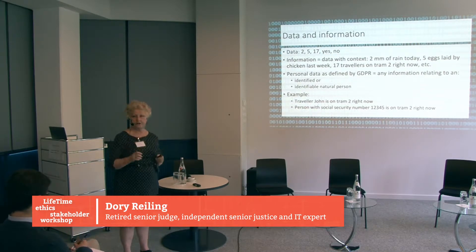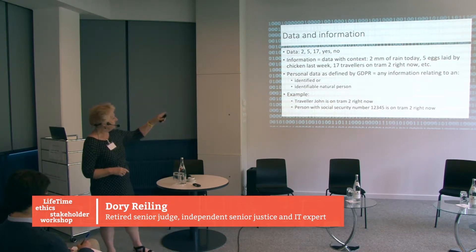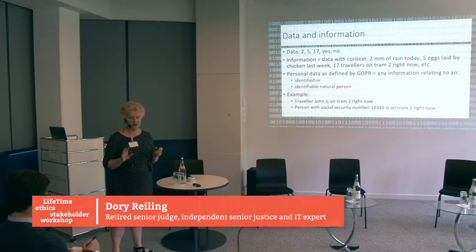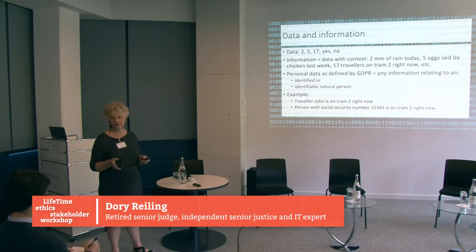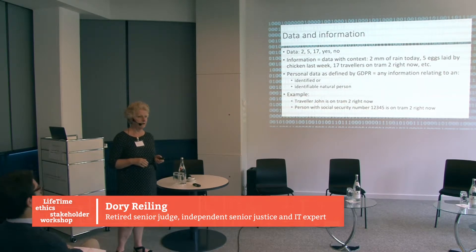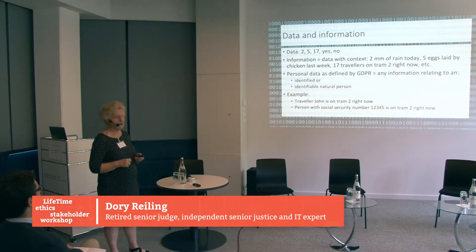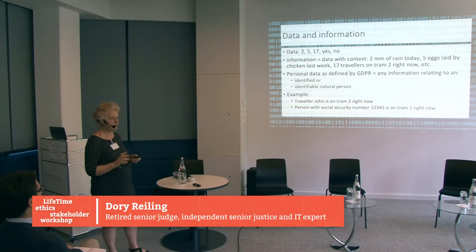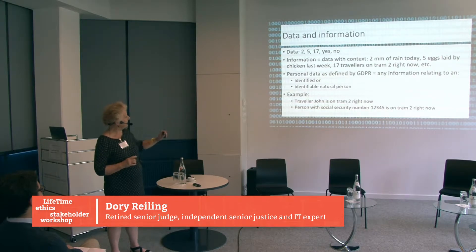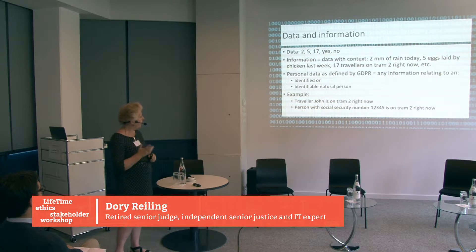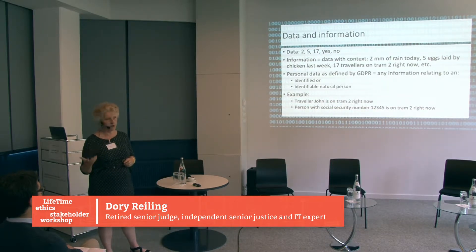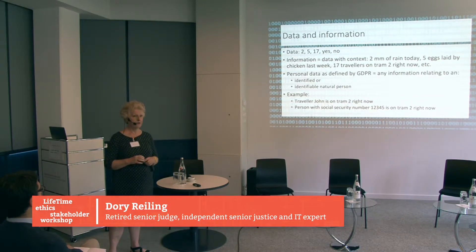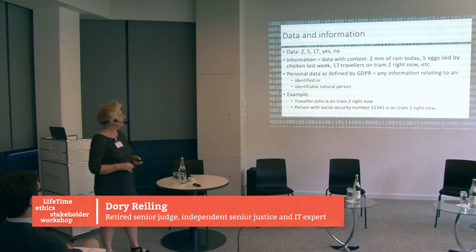I thought I'd give you the definition from the GDPR, and I was really surprised when I looked it up. The GDPR says personal data are any information that is related to an identified or identifiable person. So data and information are treated as the same thing, but they're not. What GDPR means by personal data is: traveller John is on tram 2 right now, or someone with a given social security number is on tram 2 — that's an identifiable kind of personal information.